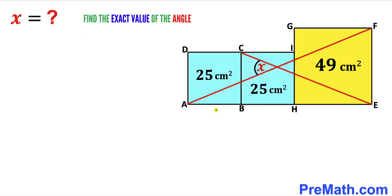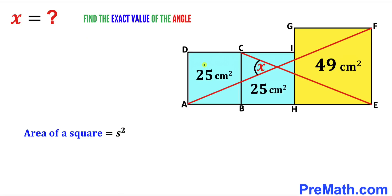We are interested in finding the side lengths of all these squares. Recall the area of a square formula: area equals S², where S represents the side length. Focusing on the blue squares, the area is 25, so S² = 25. Taking the square root, the side length S turns out to be 5 cm.